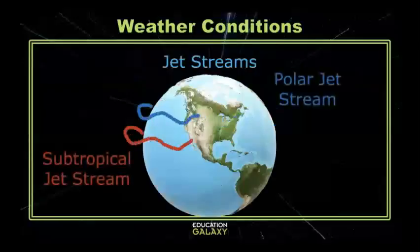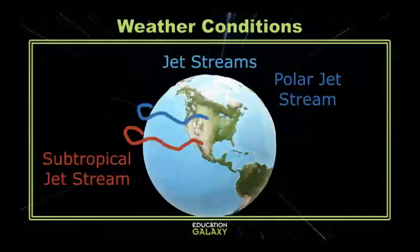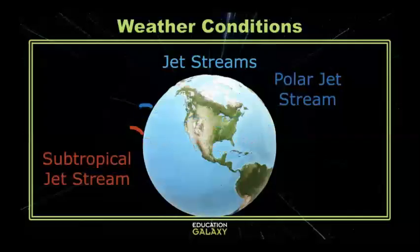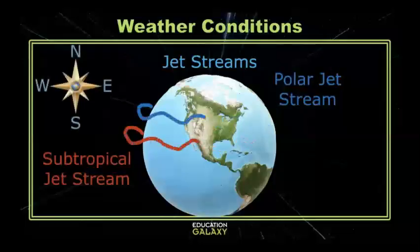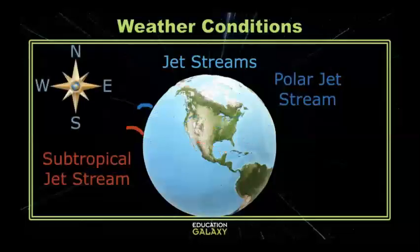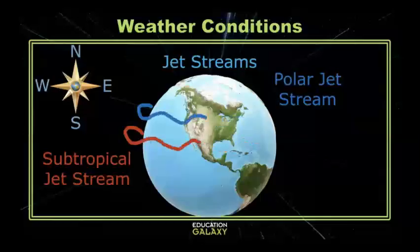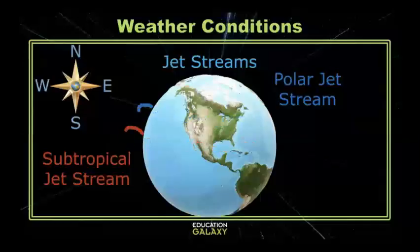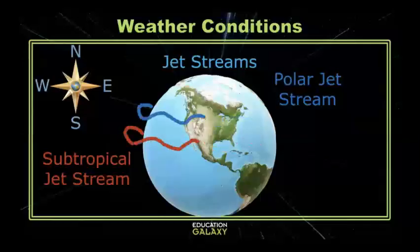Both of these jet streams are westerlies, meaning that these winds travel from the west to the east. The jet stream's paths can alter for various reasons, but these winds are responsible for moving high and low pressure air masses, which affect the amounts of precipitation different areas receive.